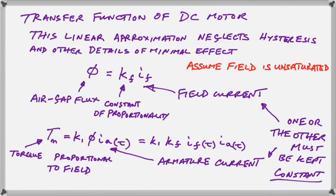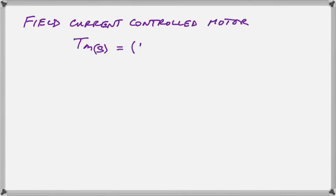We have to either keep the field current constant and vary the armature current to control the motor speed or else we have to do the reverse. One must be kept constant. So let's go with the field current control and we'll keep the armature constant for this part.